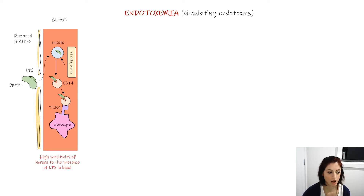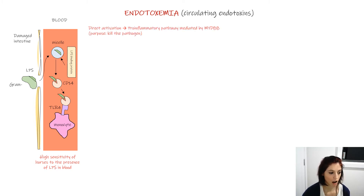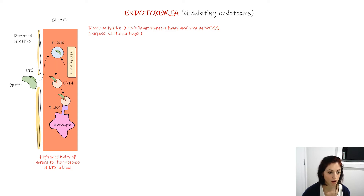Horses are a species that is really sensitive to the presence of LPS in the blood. The interaction of LPS with the Toll-like receptor 4 causes a direct activation that constitutes the pro-inflammatory pathway, mediated by an adapter protein called myeloid differentiation primary response protein 88.